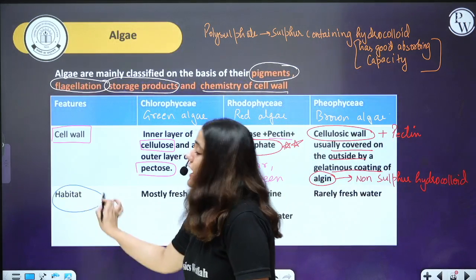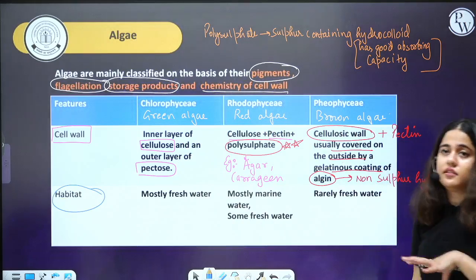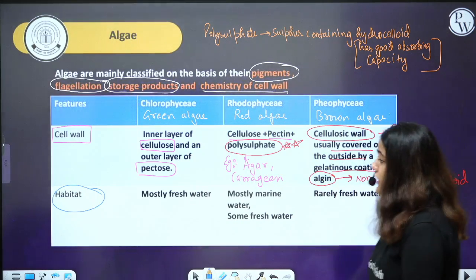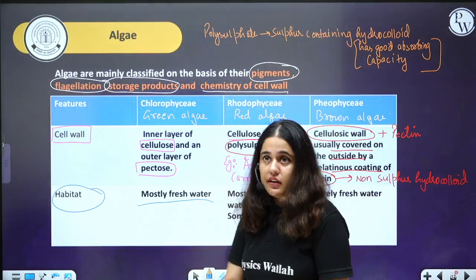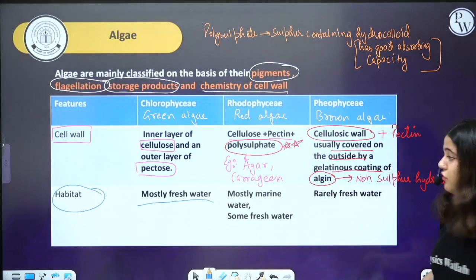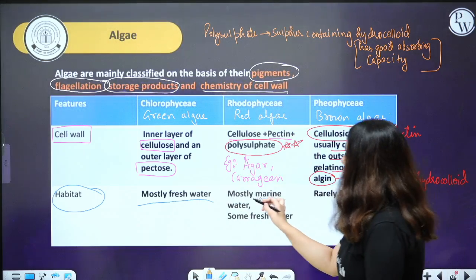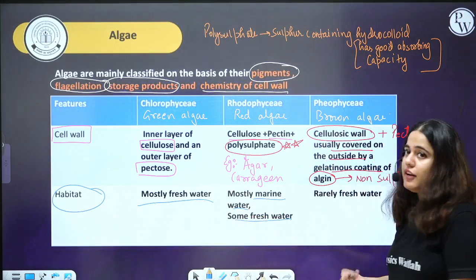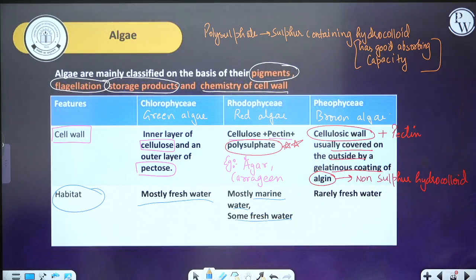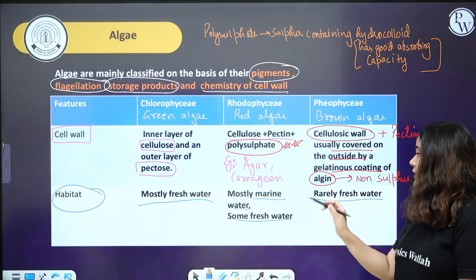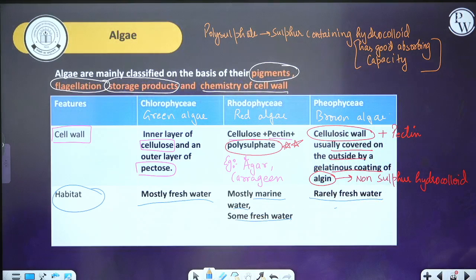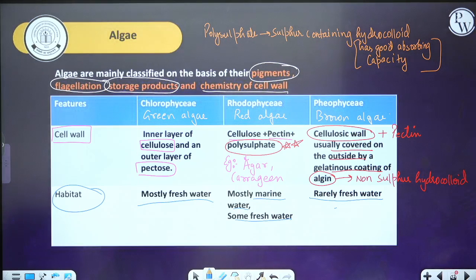Regarding habitat: Chlorophyceae members are mostly found in freshwater. Rhodophyceae members are mostly found in salty marine water, but some can be in freshwater. Phaeophyceae are rarely found in freshwater; they are mostly found in marine water.